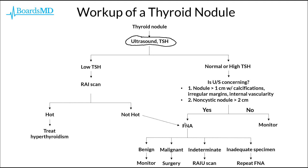On the other hand, going back to the start of our workup — if the TSH that we initially get is found to be normal or high, we then need to take a closer look at the ultrasound to see if it is concerning in terms of its features. If we see a nodule that is greater than one centimeter with calcifications, irregular margins, or internal vascularity, or if we see a non-cystic nodule that is greater than two centimeters, then we are more concerned about it being malignant and therefore proceed to a fine needle aspiration.